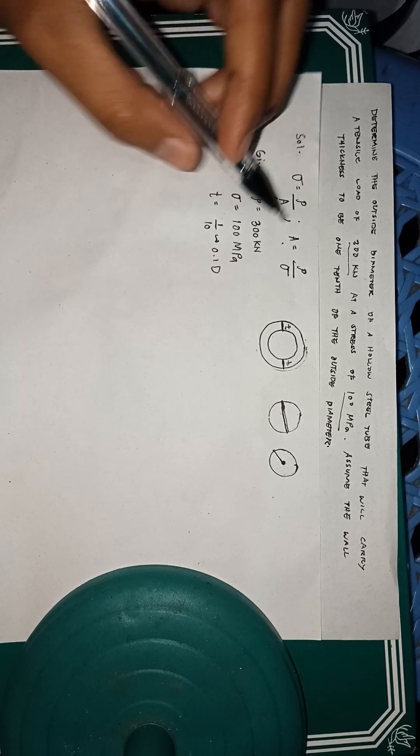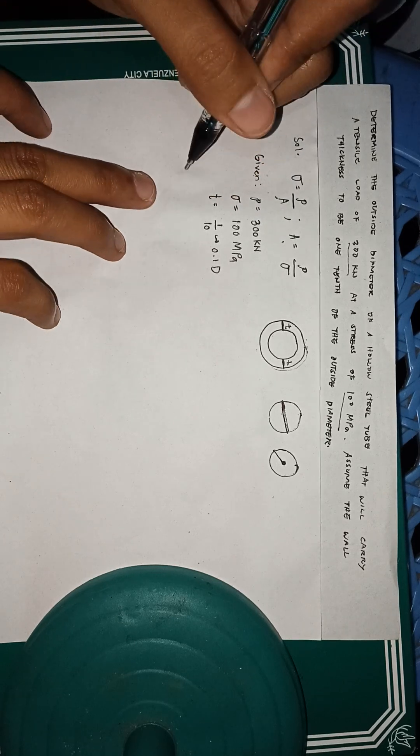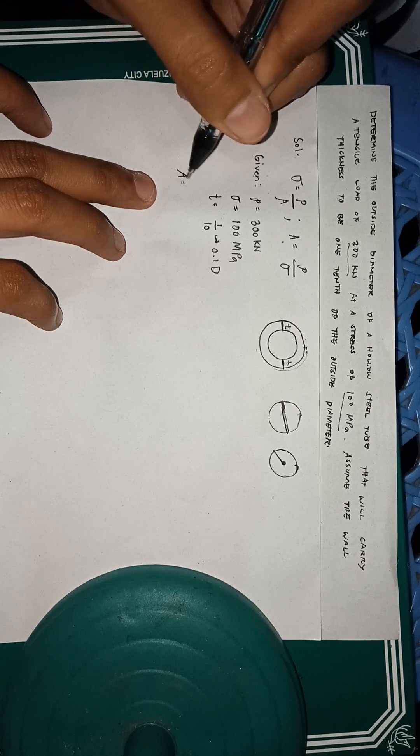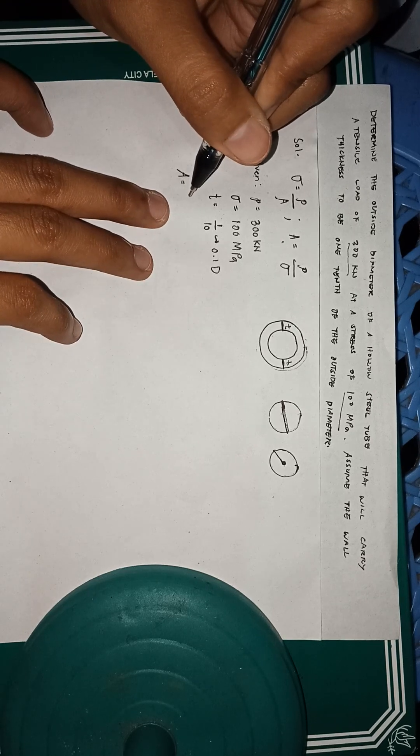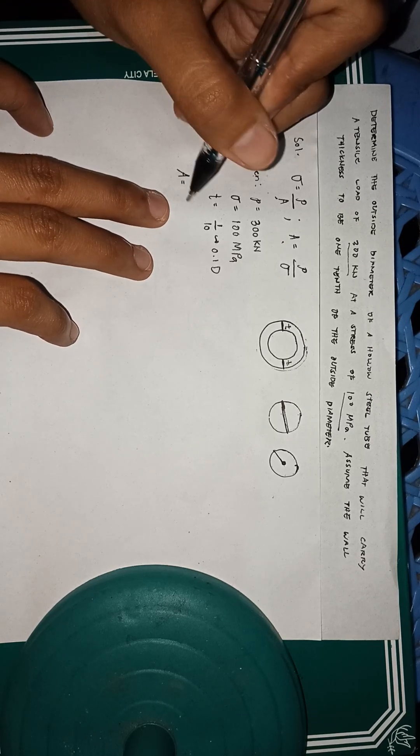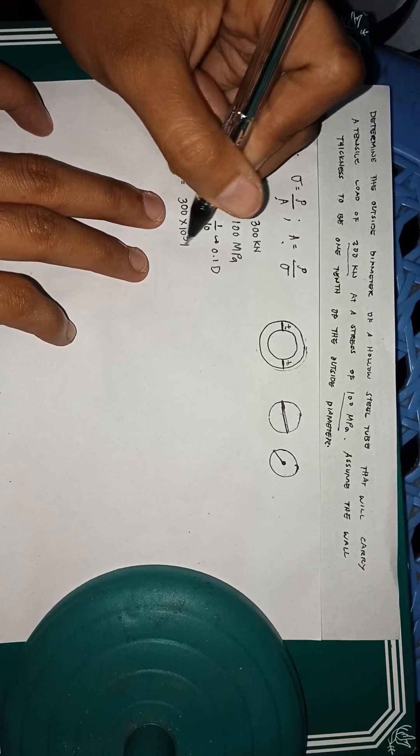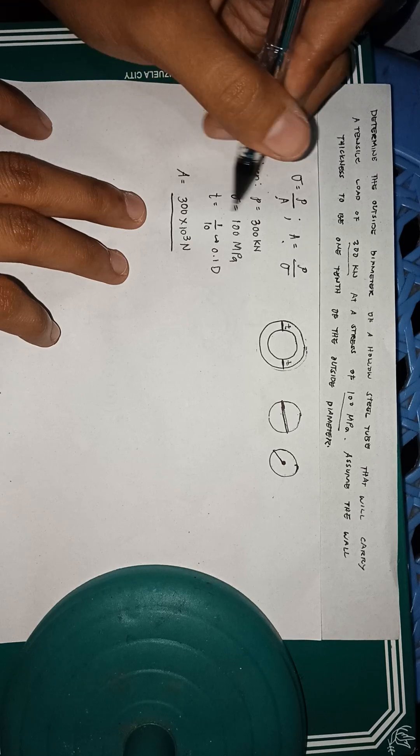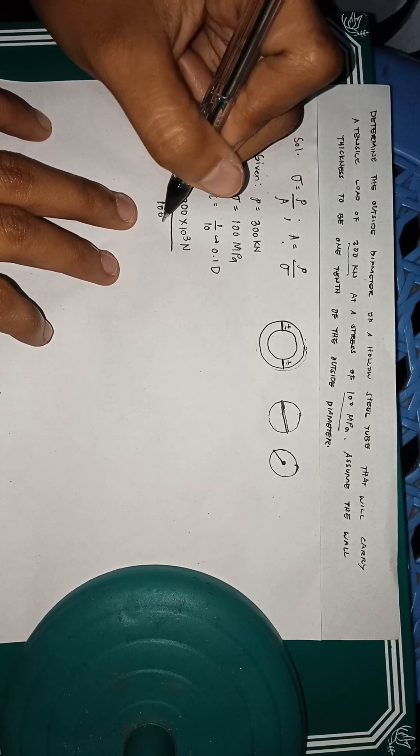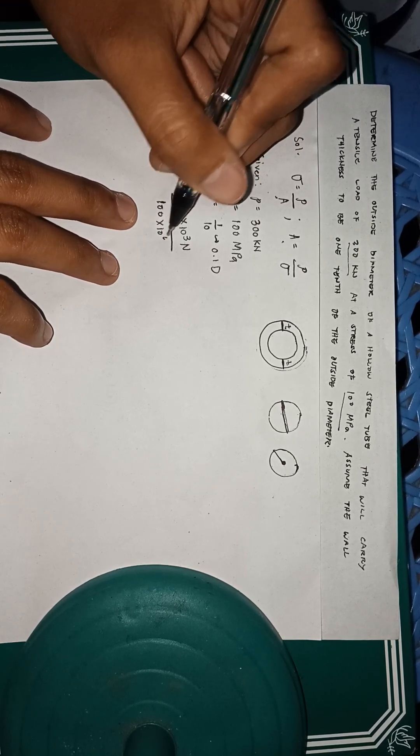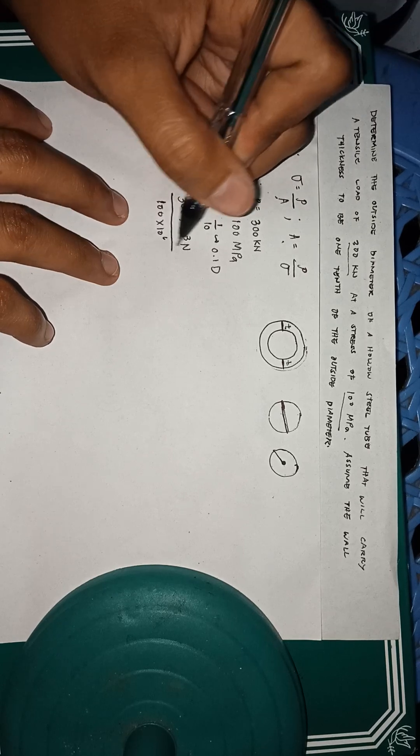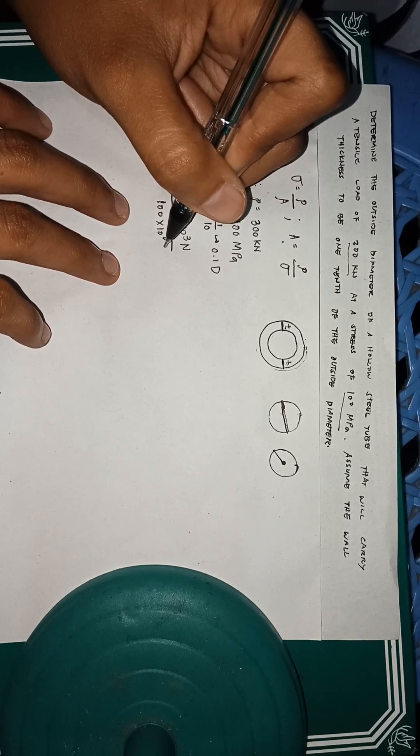Now let's calculate first the area inside it. Area is force over stress. Our force is 300 kilonewton, 10 to the power of 3 newton, over 100 to the power of 6, because mega is 6, pascal.